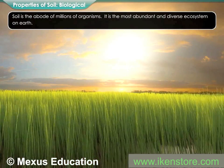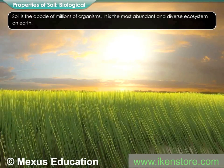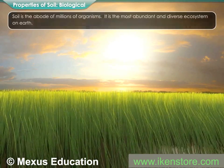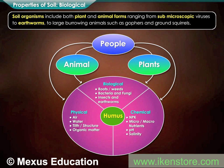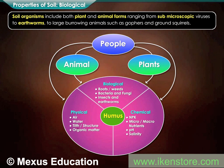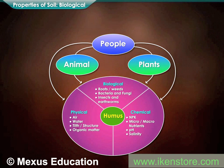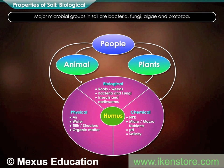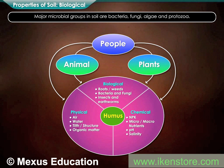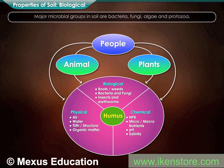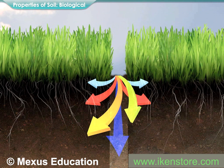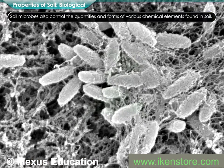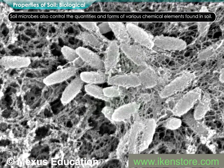Soil is the abode of millions of organisms; it is the most abundant and diverse ecosystem on earth. Soil organisms include both plant and animal forms, ranging from sub-microscopic viruses to earthworms to large burrowing animals. Major microbial groups in soil are bacteria, fungi, algae, and protozoa. These feed on plant residues, burrow the soil, and help in aeration and percolation of water. Soil microbes also control the quantities and forms of various chemical elements found in soil.